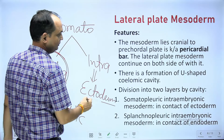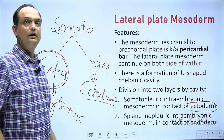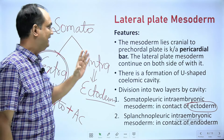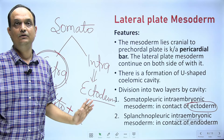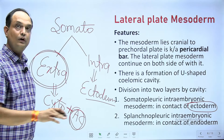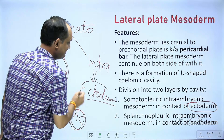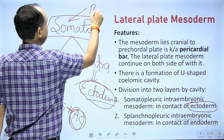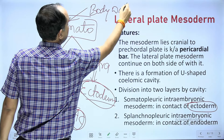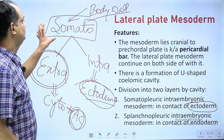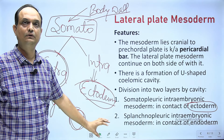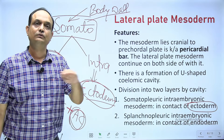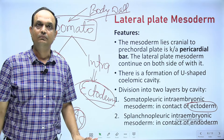When reading about somatopleuric extra embryonic and somatopleuric intra embryonic, note one similarity: the amniotic cavity floor is formed by epiblast cells, which later form the definitive ectoderm. 'Somato' relates to anything pertaining to the body wall, meaning it is related to the ectodermal layer. Somatopleuric intra embryonic mesoderm is related with the ectoderm; somatopleuric extra embryonic is related with the amniotic cavity, whose floor is also formed by future ectoderm.